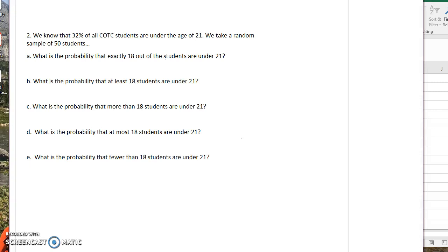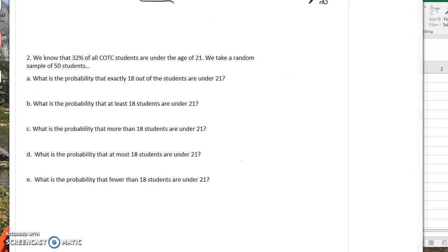Okay, another example of using the normal to approximate the binomial. It says we know that 32% of SCOTC students are under the age of 21. We take a random sample of 50 students. What is the probability that exactly 18 students are under the age of 21? You might think to yourself, well we could use the binomial situation for this one,